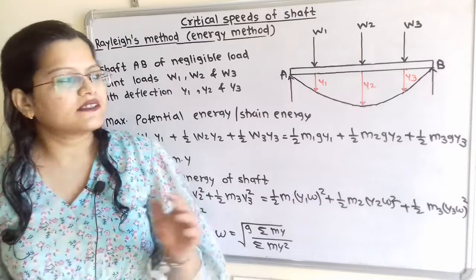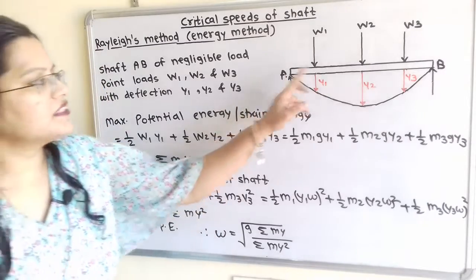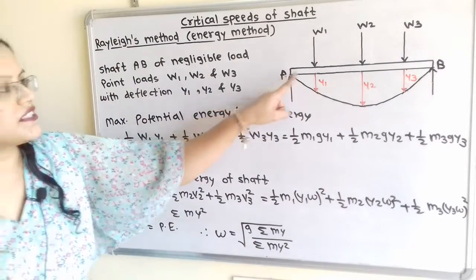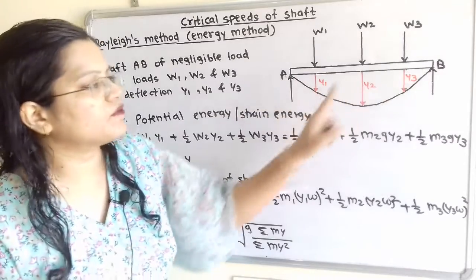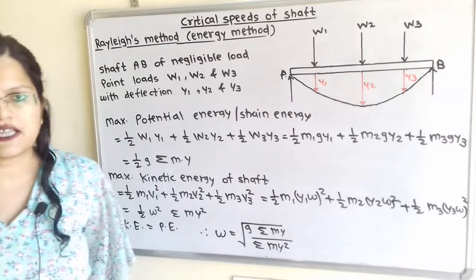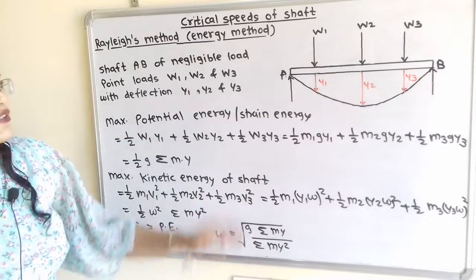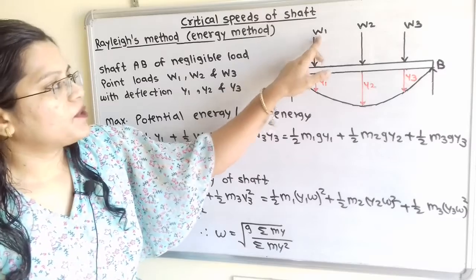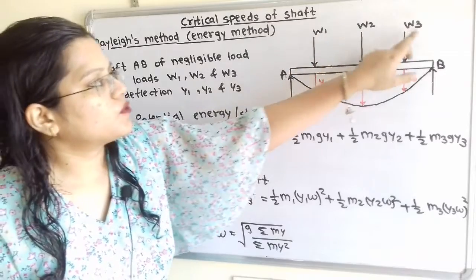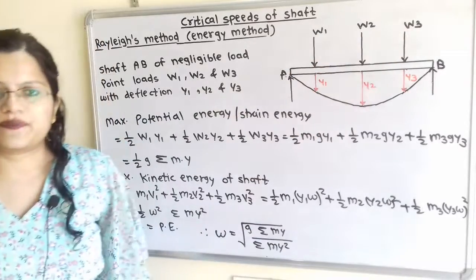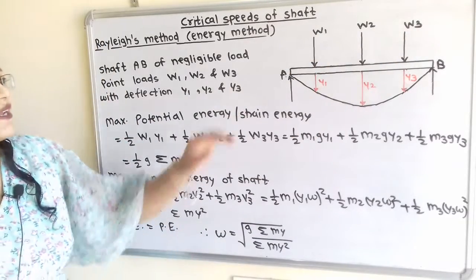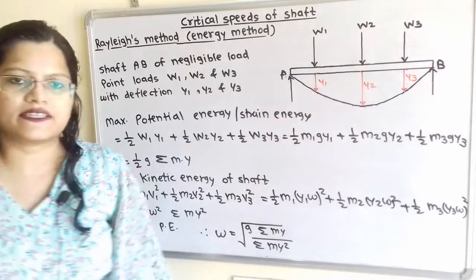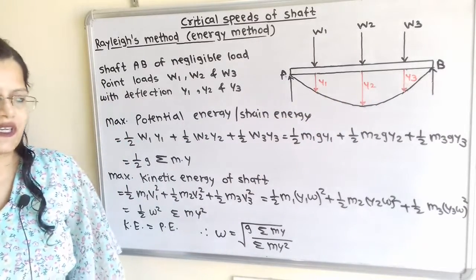Now we will consider one shaft of negligible mass. Here is the shaft AB whose length is L. There are three point loads known, that is W1, W2, W3, which are having deflections Y1, Y2, and Y3 respectively.